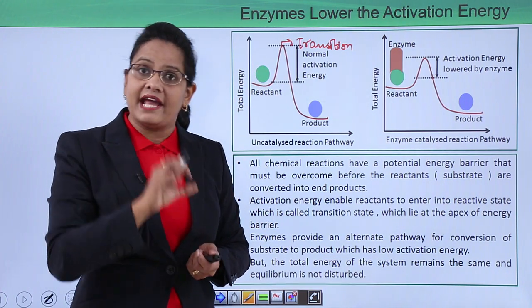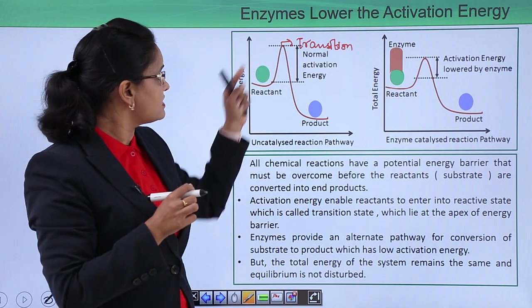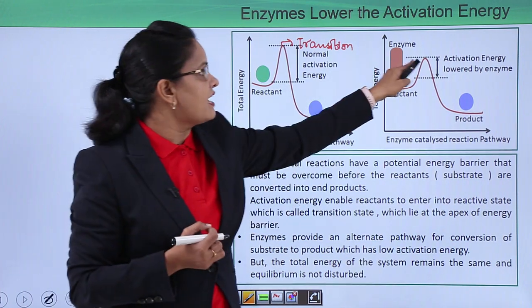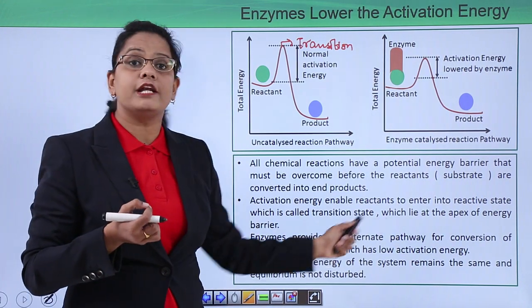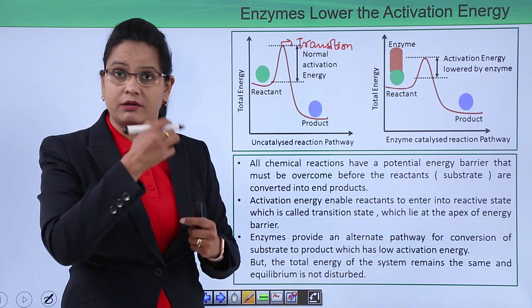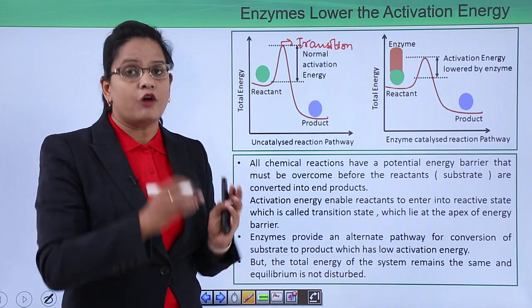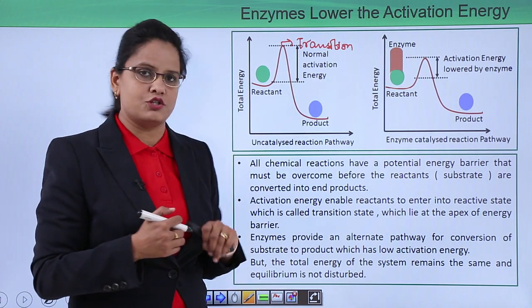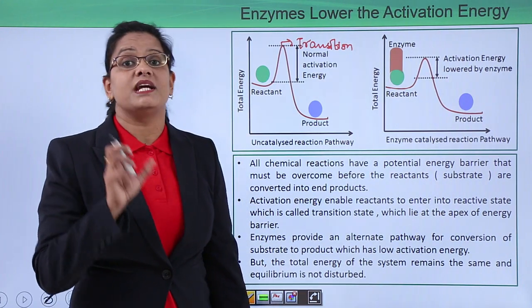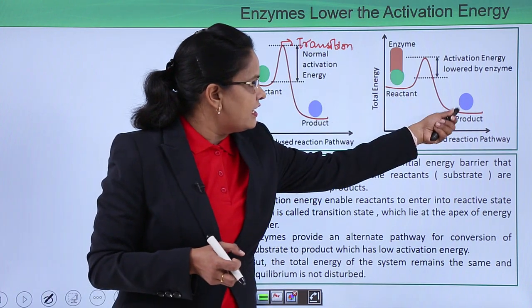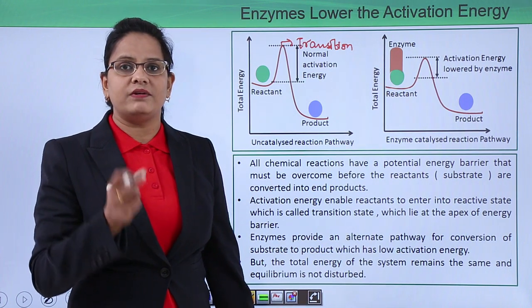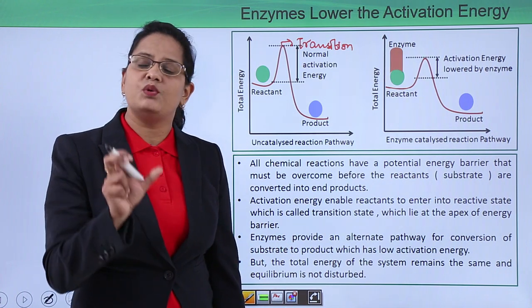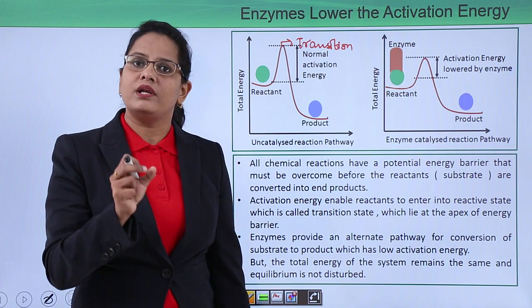The transition state is the reactive state that any reactant must reach to be converted into product; it is found at the top of the energy barrier. When an enzyme is present, the transition state is attained very fast. The enzyme provides an alternate pathway with a lower energy barrier, like crossing a lower mountain. The total energy of the system remains the same — only an alternate pathway lowers the activation energy — and the equilibrium constant is not disturbed; equilibrium is achieved at the same level, but only the time varies.